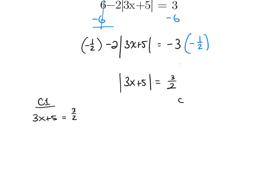The second case — Case 2 — we're claiming that value is negative. The absolute value bar could have an expression that is negative. What does a calculator do when you type a negative inside the absolute value bars? It multiplies it by negative 1 to make it positive. So take 3x plus 5, multiply it by negative 1, and the outcome will still become positive 3 halves.